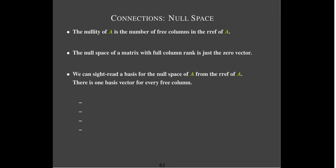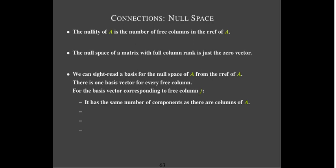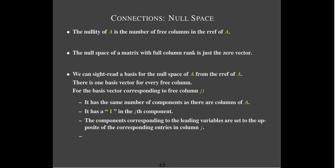For each basis vector corresponding to the Jth free column: it has the same number of components as there are columns of A (making the Ax = 0 multiplication possible); it has a one in the Jth component corresponding to the Jth free column; the components corresponding to the leading variables are the opposites of the corresponding entries in column J of the reduced row echelon form; and everything else is zero.